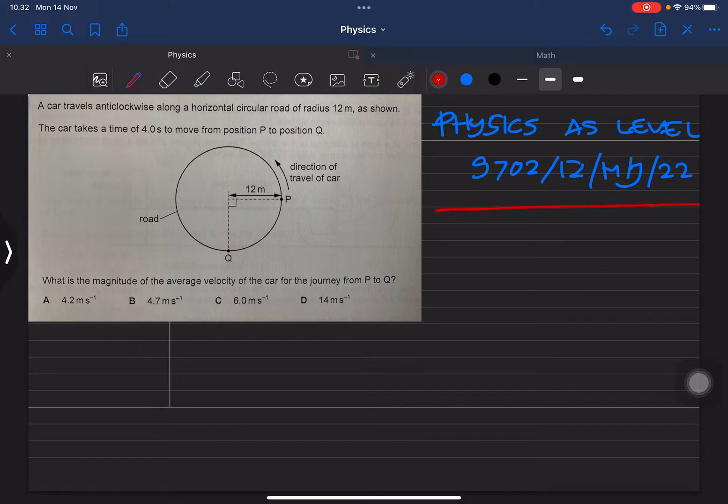The car takes a time of 4.0 seconds to move from P to Q. The direction of travel is anti-clockwise from P to Q, and the radius is 12 meters. This is the road. What is the magnitude of the average velocity of the car from P to Q?